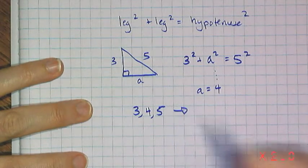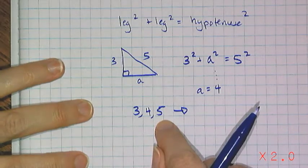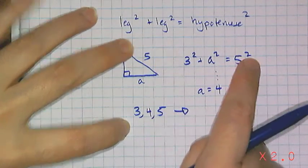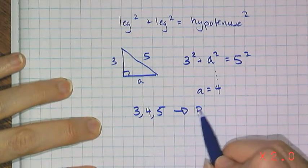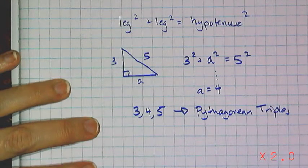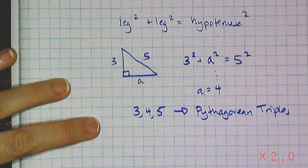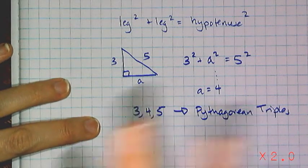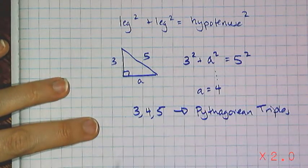And whenever you have three integers that satisfy the Pythagorean Theorem, these are called Pythagorean triples. And a lot of times when teachers want the numbers to come out nice, they will take a Pythagorean triple and use it.